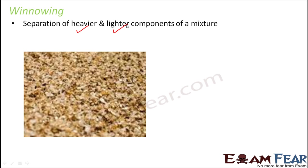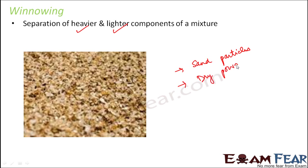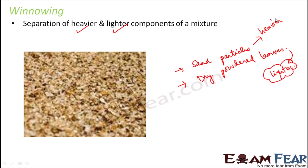But when you compare the two — that is the sand particles on one hand, and the dry powdered leaves on the other — you would see that the sand particles are heavier and the dry leaves are definitely lighter. So this is something where the two differ: one is heavy, the other is light. This is where winnowing helps.